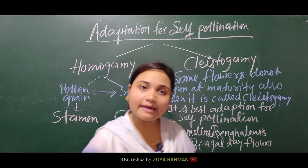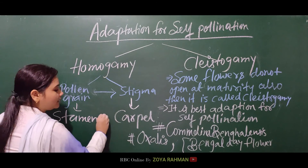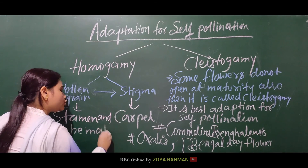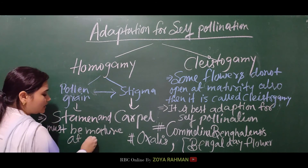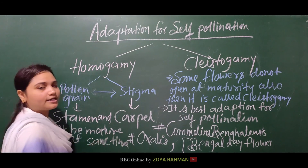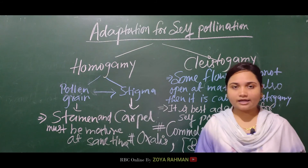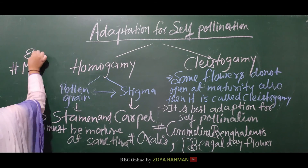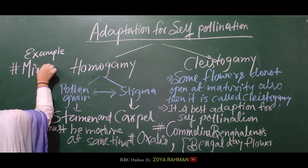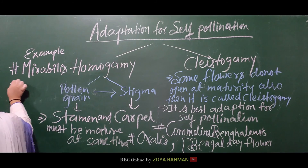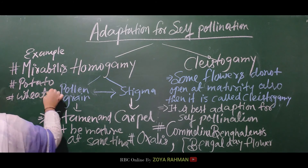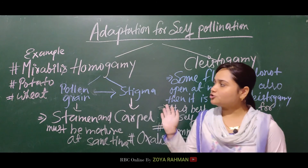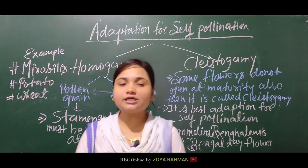Now let's write the definition for homogamy. Stamen and carpel must mature at the same time. When they mature simultaneously, this is called homogamy. Examples of homogamy include Mirabilis, potato, and wheat. So homogamy and cleistogamy are the two adaptations most required for self-pollination.